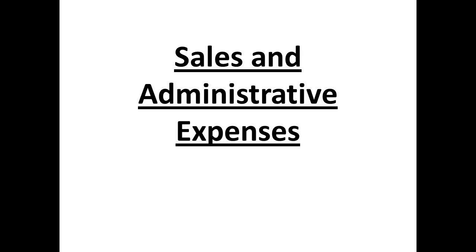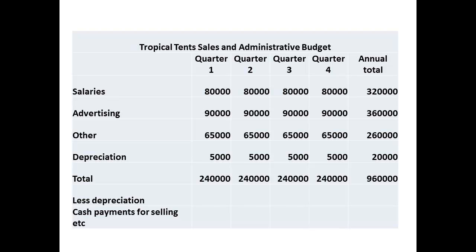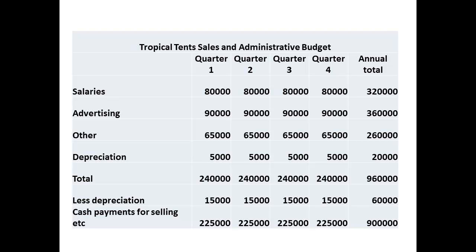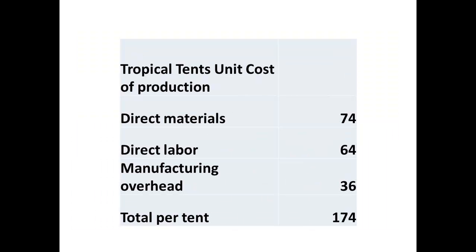Finally, the budget for sales and administrative expenses. In this case, the cost of salaries, advertising, and other expenses are entered, together with depreciation, giving a total for the budget. Depreciation is then subtracted back to give the cash payments for these expenses each quarter. We have assumed there is no capital expenditure budget this period to keep things simple. We now look at determining the unit costs to produce each tent. We have figures for direct materials and direct labor. Dividing total manufacturing overhead by total units produced, we get a unit cost for manufacturing overhead. Totaling these, we have a unit cost per tent produced.